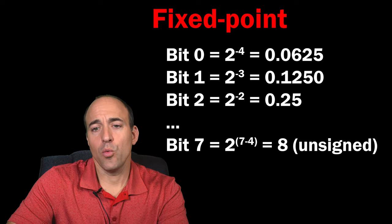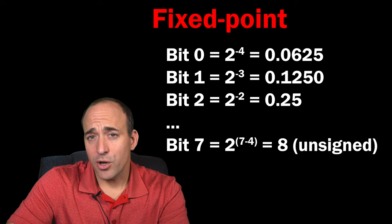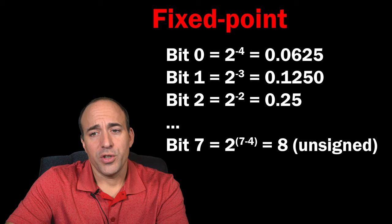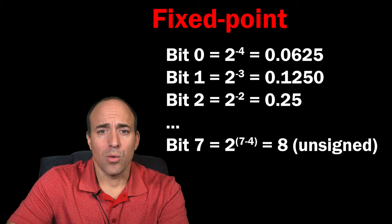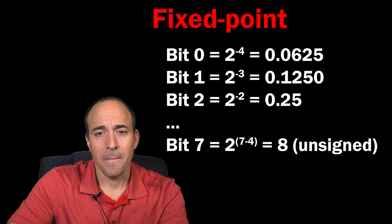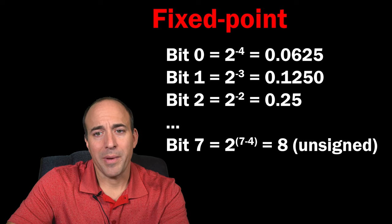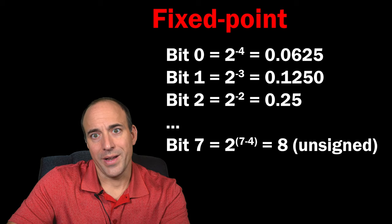Bit 1 carries a weight of 2 to the negative 3rd power, or 1/8. Bit 2 carries a weight of 2 to the negative 2nd power, or 1/4. All the way to bit 7, the leftmost bit, which carries a weight of 2 raised to the power of 7 minus 4, or 2 to the 3rd power, or 8.